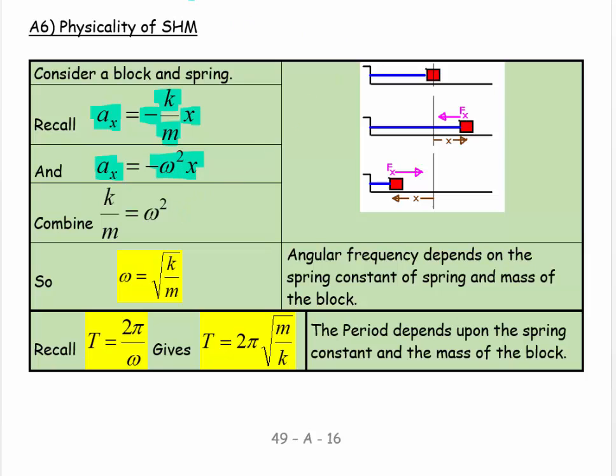So we can put these things together. Minus k over m times x equals minus omega squared x. The x's cancel and the negative signs disappear, so k over m equals omega squared.